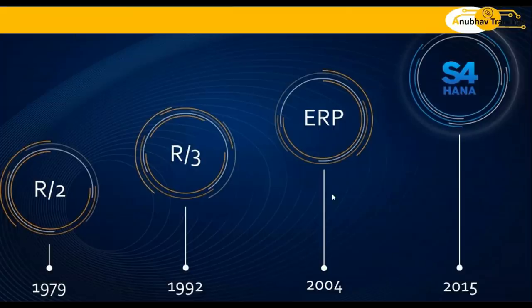With the R3 architecture, SAP announced an ERP solution which integrates all departments of companies together — finance, SD, MM, PP, FICO — all these departments together in large corporations. This made SAP the number one ERP company in the world.